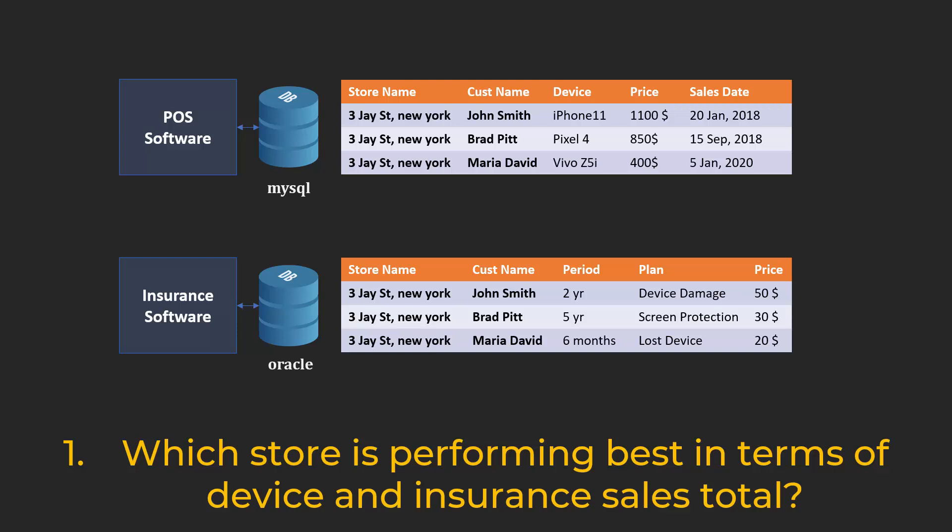Let's take the first question: which store is performing best? One obvious thing you can do is query the two databases — one MySQL and one Oracle — get the aggregate sales numbers from the first and aggregate insurance numbers from the second, and just add them up. But this is not a good idea because these are mission-critical systems serving your real customers. What if the query is complex and it slows down the database? That's not going to be good. So typically what organizations do is copy all of this data into some other database and perform queries on that database, because even if you slow that database down, it is not serving your customers.